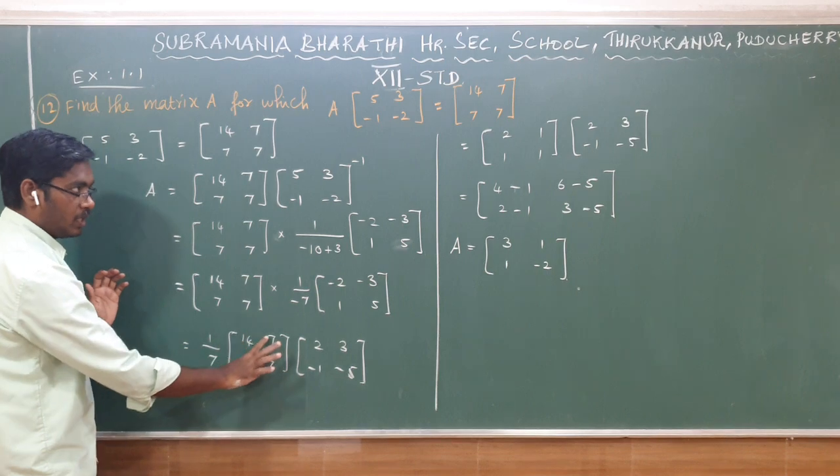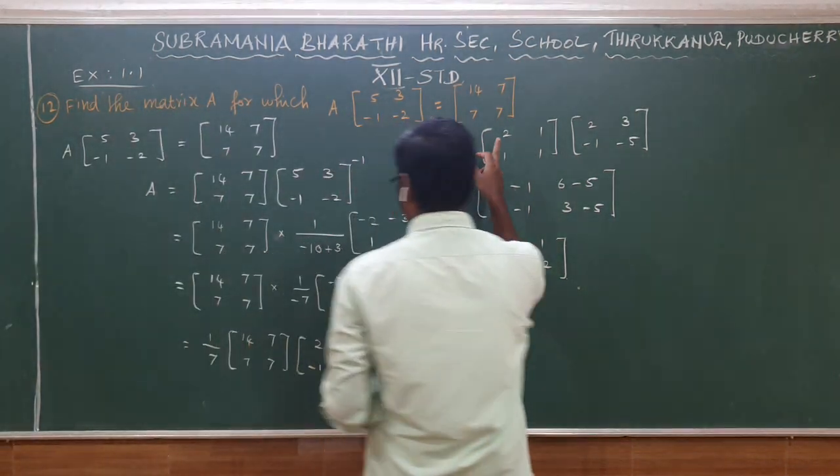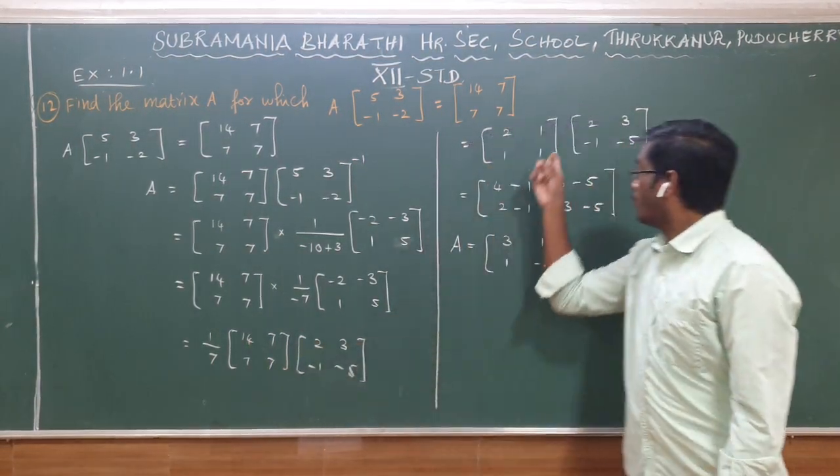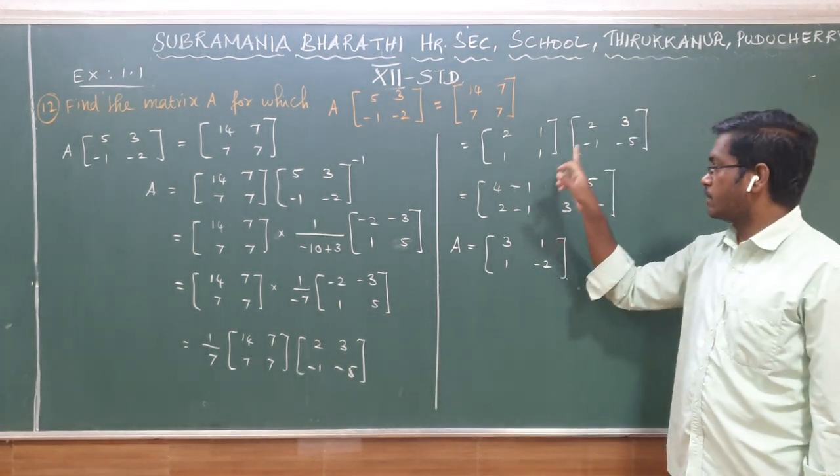We divide the matrix. The inverse matrix is [2, 1; 1, 5].